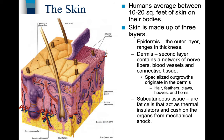Humans average between 10 to 20 square feet of skin on their bodies. Skin is made up of three different layers. The top layer is the epidermis — the outer layer, which ranges in thickness. If you're relatively young, your skin is of optimum thickness. As you get older, your epidermis becomes thinner and thinner until it's almost like tissue paper. If somebody has diabetes, their skin tends to get thick, partly due to the poorer circulation of diabetic individuals.